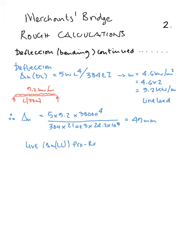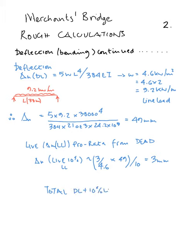The live load deflection is a contribution of 10% of live load for the natural frequency. We can pro-rata from the dead: 3 over 4.6 which is live over dead times the 49 divided by 10, giving us a value of 3 millimeters. Adding these together, the total deflection from the bending component is 49 plus 3, which is 52 millimeters.